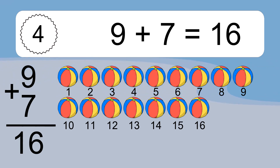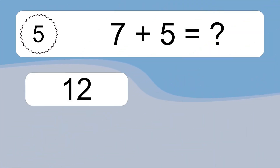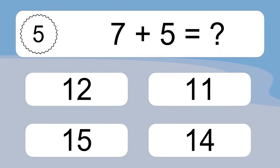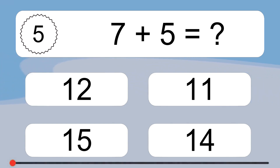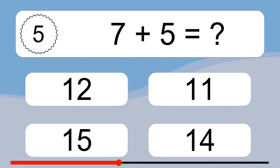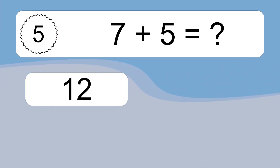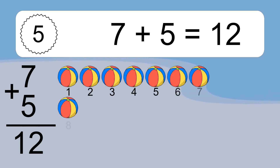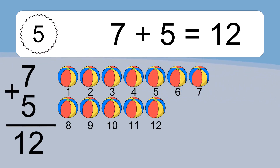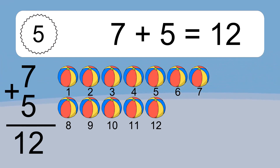7 plus 5 equals what? Let's count it: 1, 2, 3, 4, 5, 6, 7, 8, 9, 10, 11, 12.